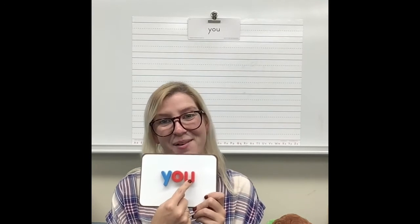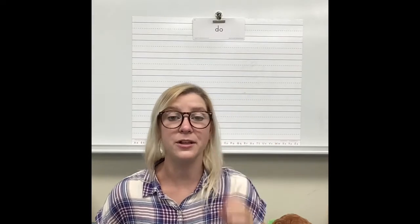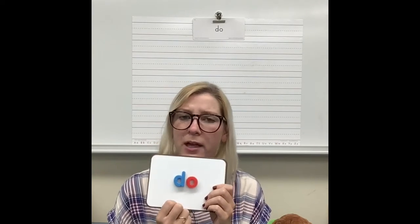In 'you': consonant, vowel, vowel. This is 'do.' To spell 'do' we need D, O. Spell 'do' with me — let's spell it like a sad baby: D, O — do. D is a consonant. O is a vowel.